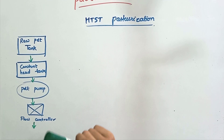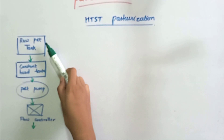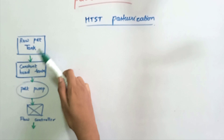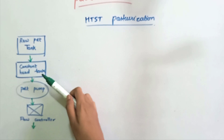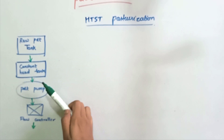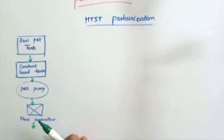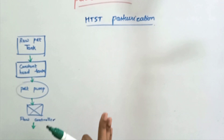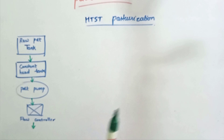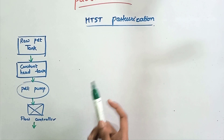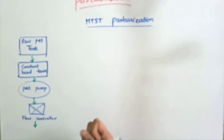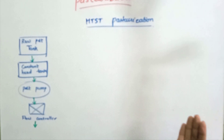Let's look at the flow diagram of HTST pasteurization. Firstly, there is a raw product tank where we store our raw product. From the raw product tank, the product is pumped into a constant head tank. From the constant head tank, it is pumped with the help of a pump to the flow controller, whose aim is to control the flow rate of the product. From the flow controller, the milk reaches the next sections, which are very important.